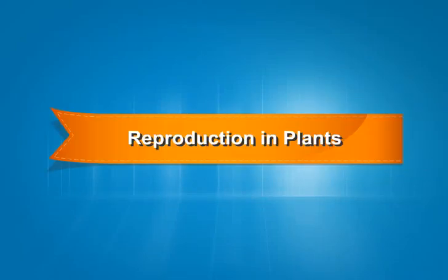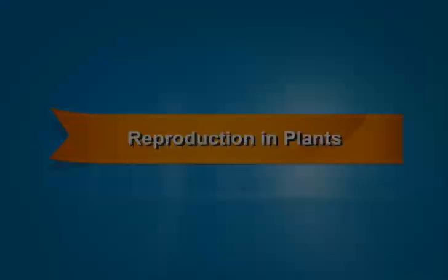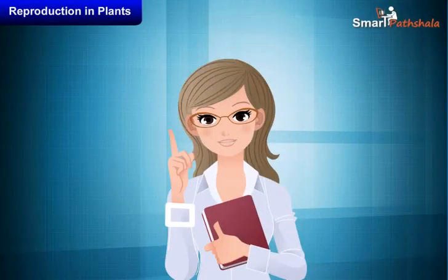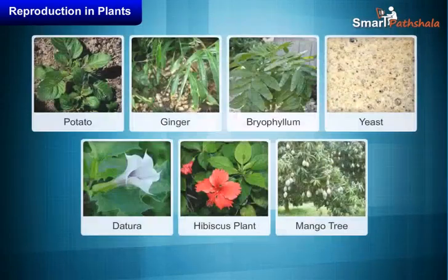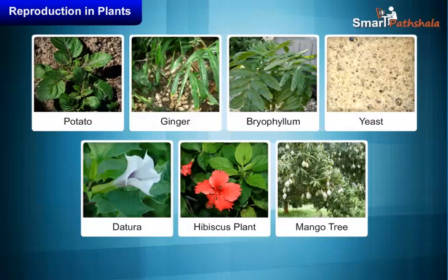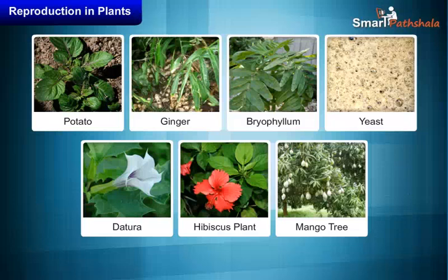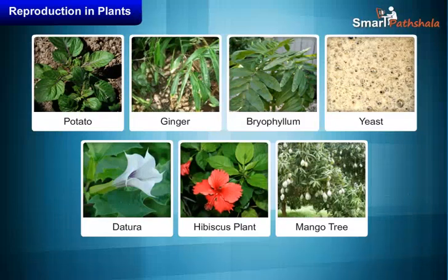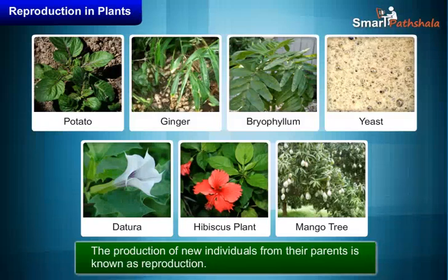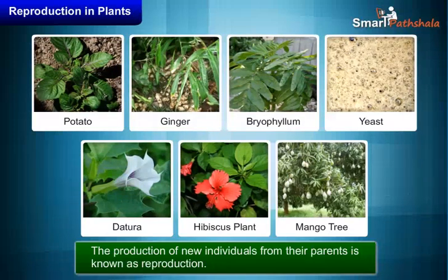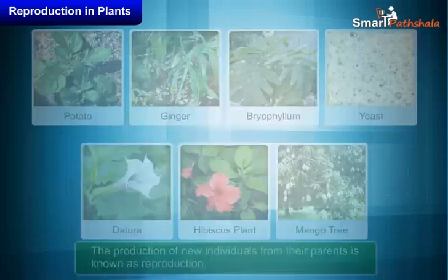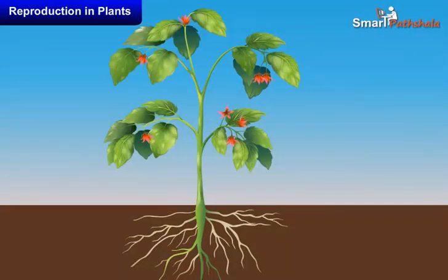Reproduction in Plants. In this chapter, let us discuss about modes of reproduction in plants. As we learnt in the previous classes, reproduction is one of the characteristics exhibited by all living organisms. The production of new individuals from their parents is known as reproduction.